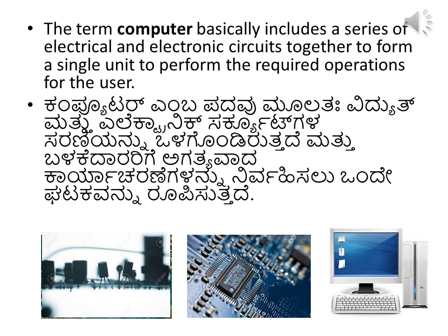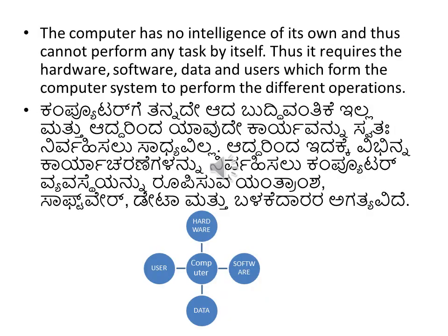A computer has no intelligence of its own and thus cannot perform any task by itself. It therefore requires hardware, software, data, and users, which together form the computer system.